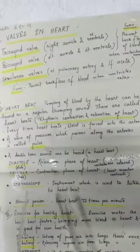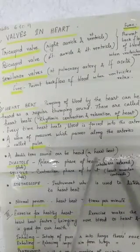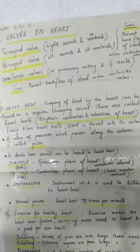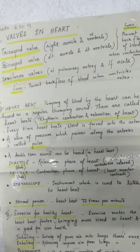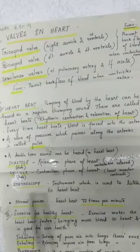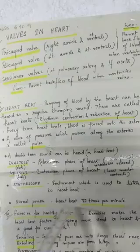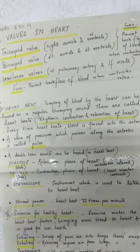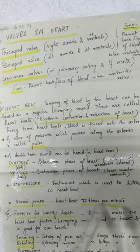What is diastole? It is the relaxation phase of the heart when the ventricles are relaxed. What is systole? It is the contraction phase of the heart when the ventricles contract. Diastole produces a 'dub' sound whereas systole produces a 'lub' sound. What is a stethoscope? It is an instrument used to listen to heartbeat. The heartbeat of a normal person is 72 times per minute.